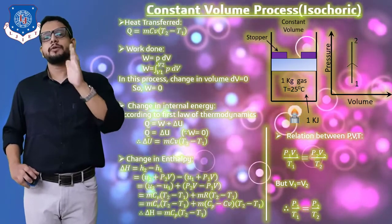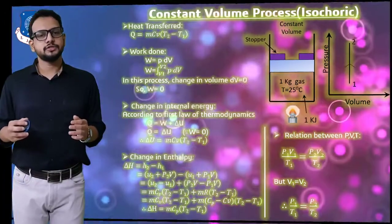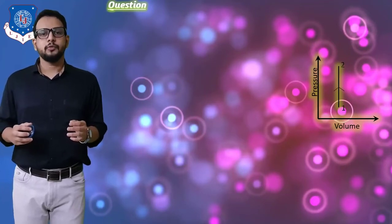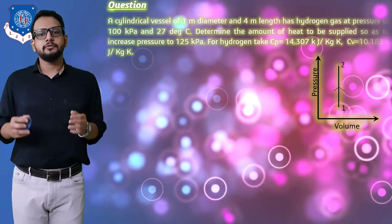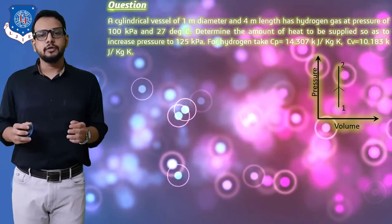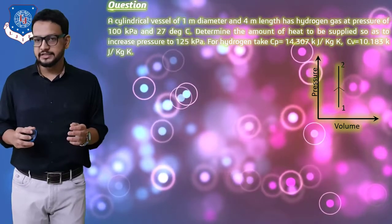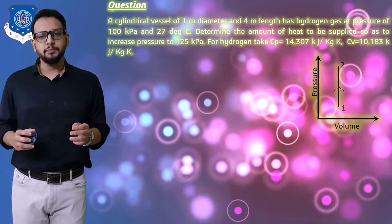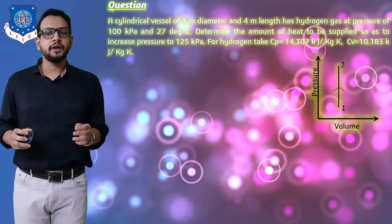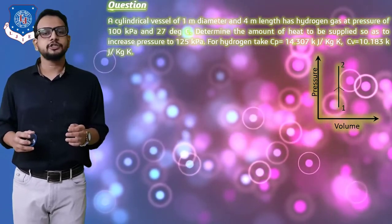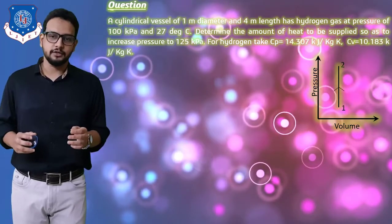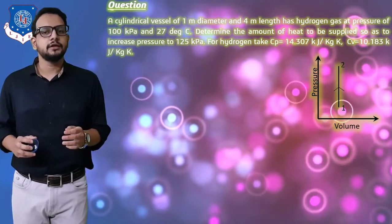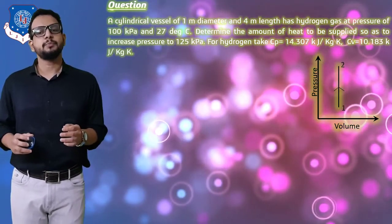Now let's see a numerical based on the constant volume process. A cylindrical vessel of one meter diameter and four meter length has hydrogen gas at a pressure of 100 kPa and 27°C. We need to determine the amount of heat to be supplied to increase the pressure to 125 kPa.